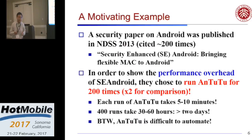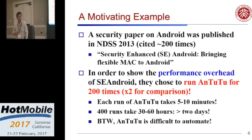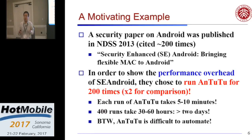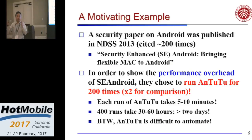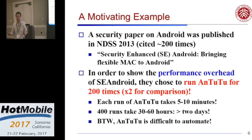One motivating example: we were doing security research and read a paper from NDSS 2013 — a very popular paper called 'SE-Android' (Secure Enhanced Android). It implements mandatory access control to Android. They need to compare performance overhead — when implementing a new security approach, you want to know what the performance overhead is. What they did was run Antutu 200 times — actually 400 times, because they needed to compare: 200 times on original Android, then 200 times on their modified Android. Each run takes maybe 5–10 minutes, so running 400 times takes two days, maybe one week.